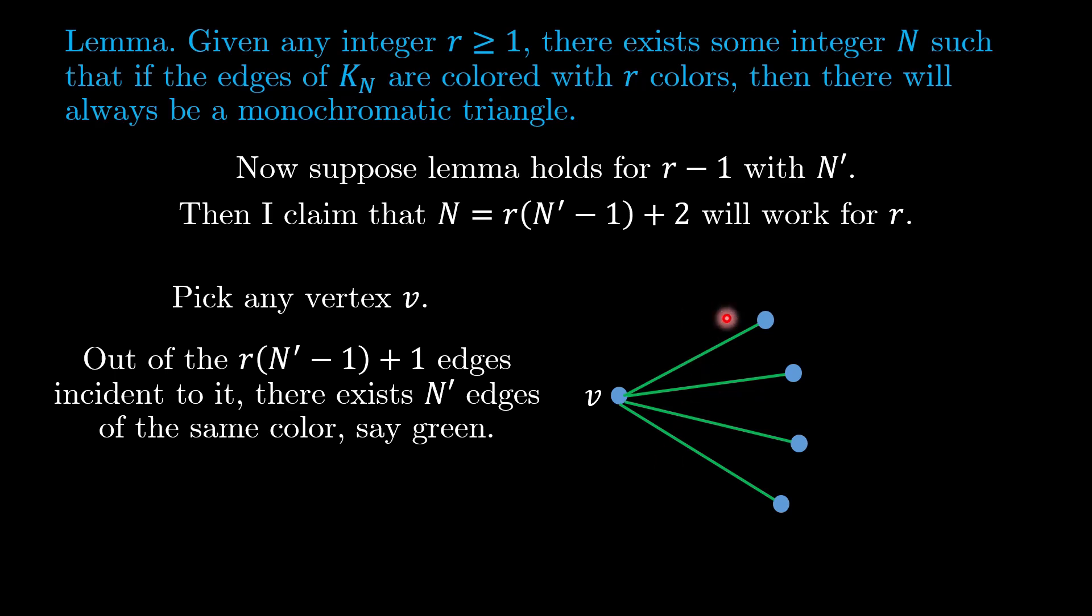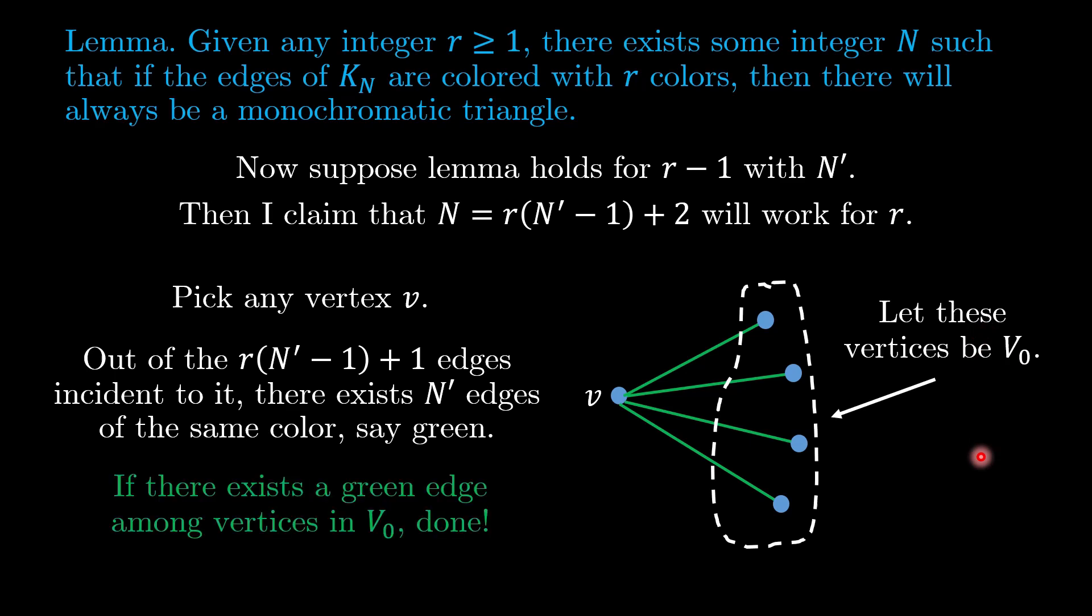So without loss of generality, let's call that color green. And let the vertices that are of green edges to v be called v_0.